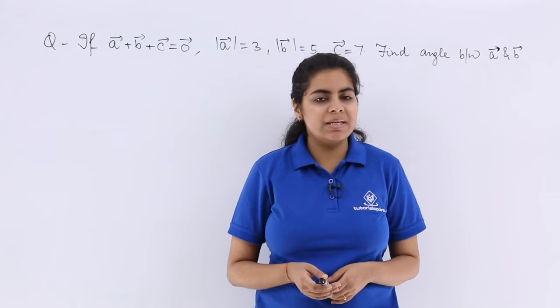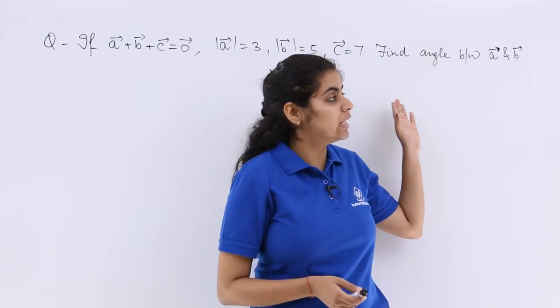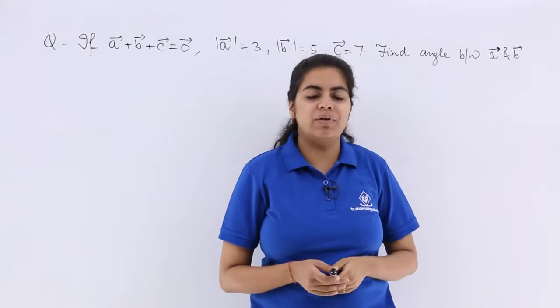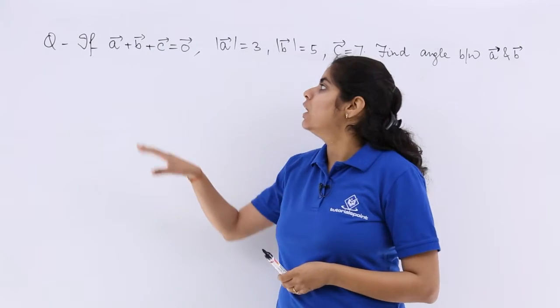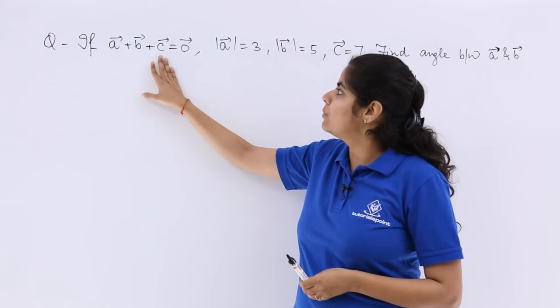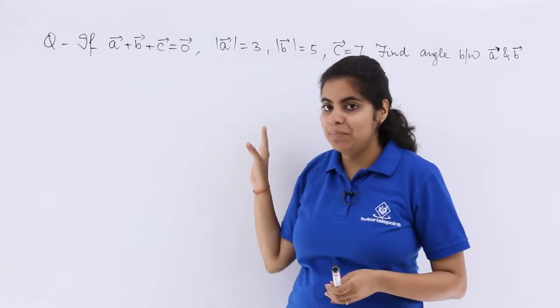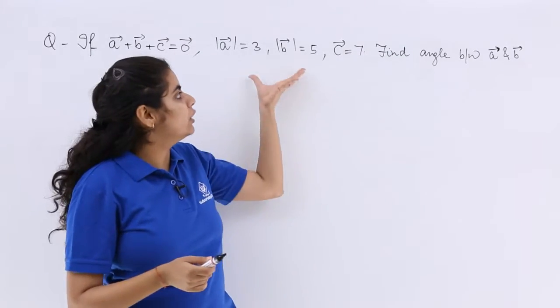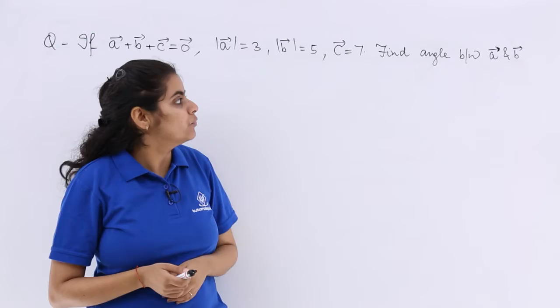This is a question from CBSE previous year examination 2008. The question asks us to find the angle between A and B when it is given that A plus B plus C is 0, where A, B, C are vectors and the magnitudes are individually also given.